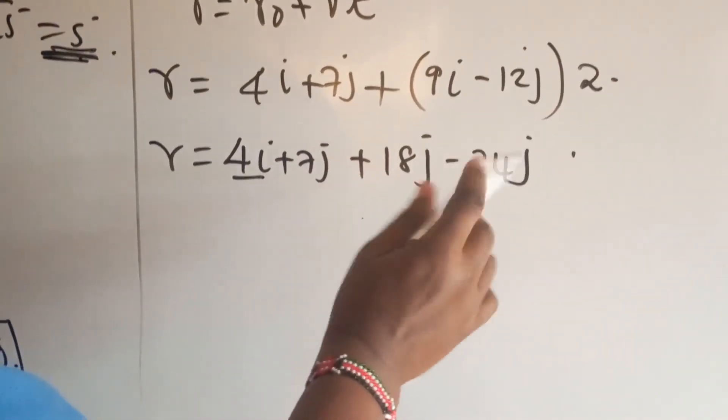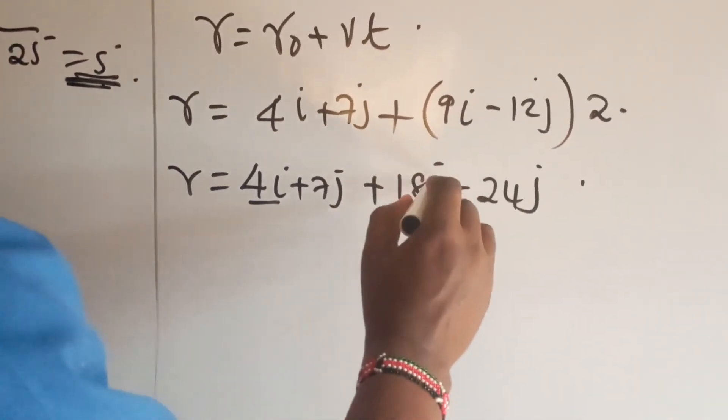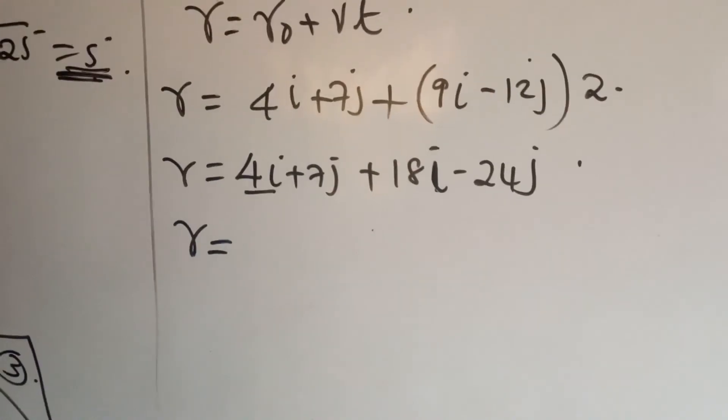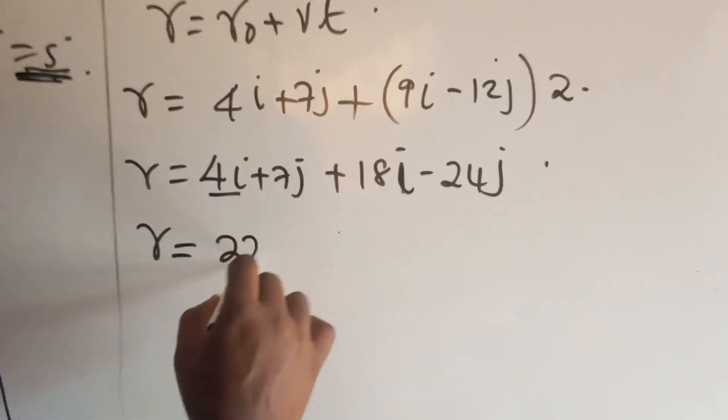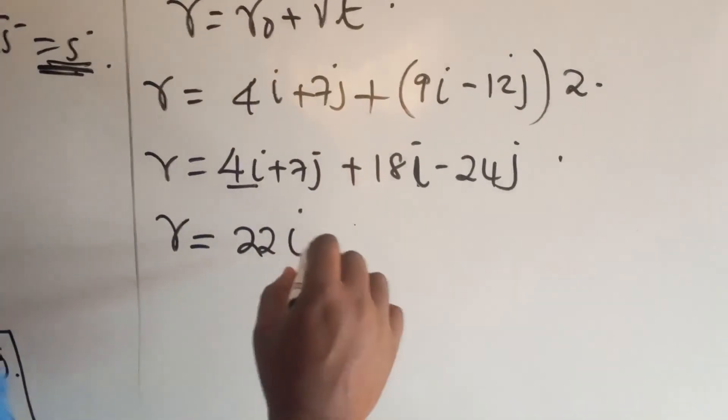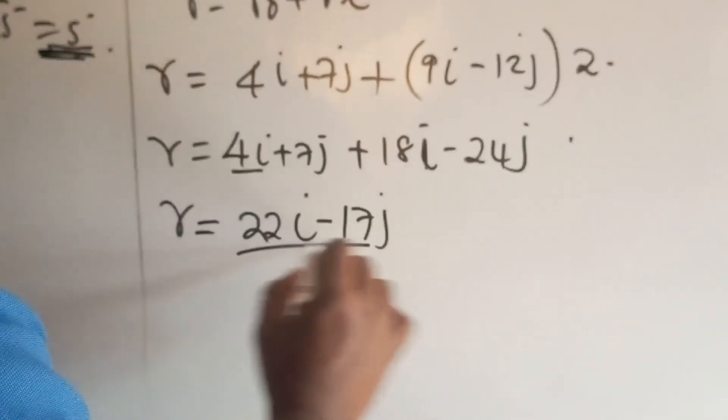Collecting i's together, we have the position vector to be equal to 22i. 7 minus 24, we get minus 17j. Okay, and that is our position vector as far as this question is concerned.